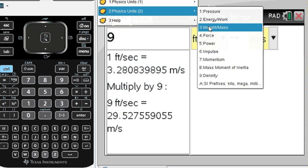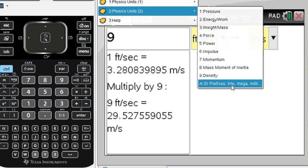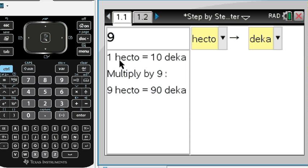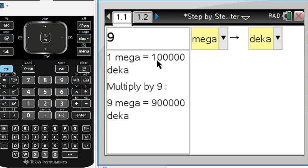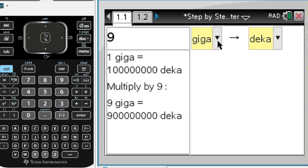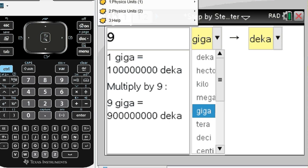More physics units: pressure, energy, weight, mass, force, power, impulse, momentum, mass moment of inertia, density, kilo, mega, milli. Let me just show you that one hectare is ten deca, one mega is ten thousand, a hundred thousand deca. So multiply by nine mega gives you that many deca. Just in case you have to convert those fancy units: mega, giga, milli, kilo, etc. So that's all physics units.